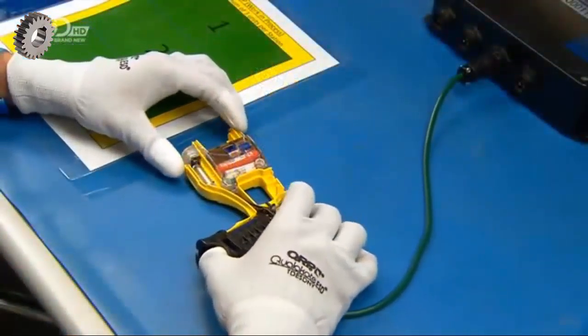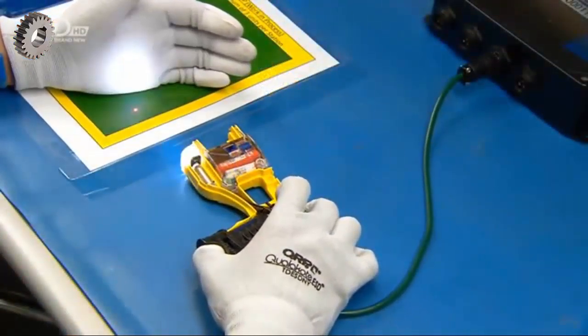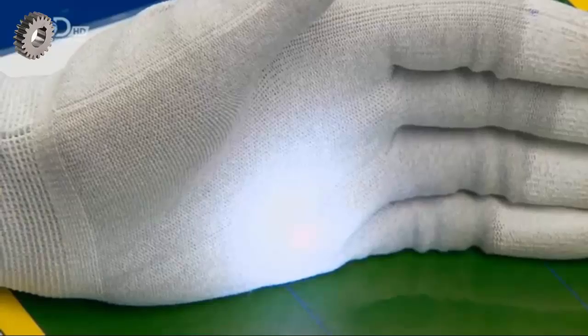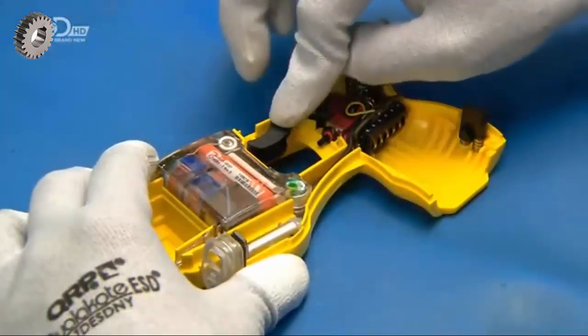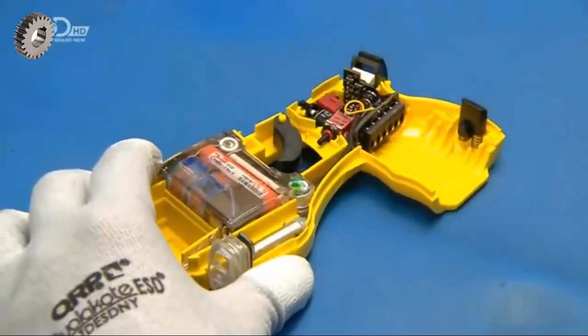He plugs the assembly into a power source and tests the laser and LED lights. He snaps on the trigger and confirms that it makes contact with the plunger on the control board.